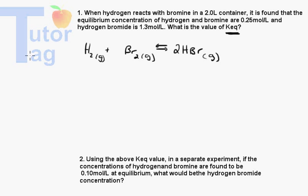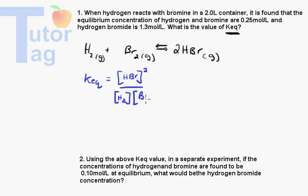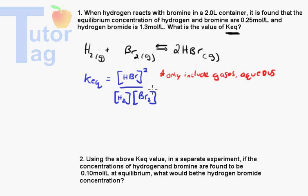This particular example: the Keq value equals the concentration of HBr to the power of 2, divided by the concentration of H2 multiplied by the concentration of Br2. There are two important points about this reaction. First, you only include gases and aqueous substances in your equilibrium expression. That's very important.